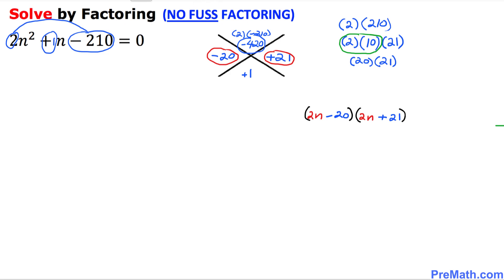Let's focus right now on our first parentheses. We can see in the first parentheses, both these numbers 2 and negative 20, they are divisible by 2. I am going to divide these numbers by 2. And in the second parentheses, 2 and 21, they have nothing in common. So just leave it alone. So let's simplify. 2n divided by 2 becomes n minus 10 times 2n plus 21. These are our factors of this given equation.